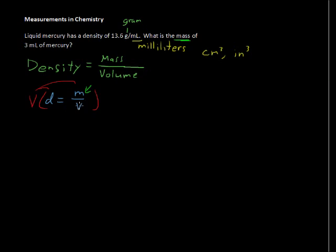That gets rid of the V in the denominator, and what we have is D times V equals the mass. So the density times the volume—or in our example, that's 13.6 grams per milliliter times 3 milliliters—equals the mass. That comes to a mass equaling 40.8 grams.